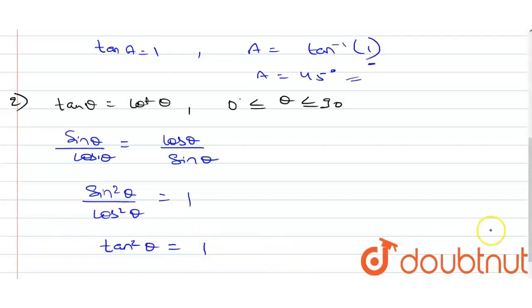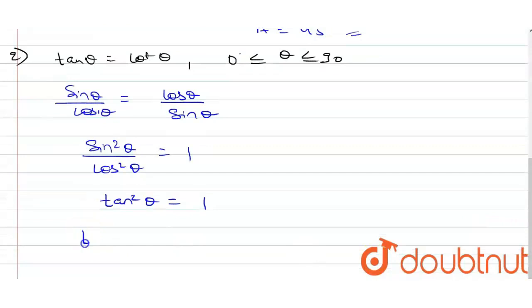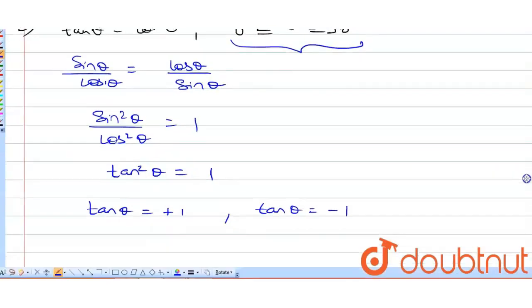It will become tan square equals 1, so that means tan will have two values: tan theta equals plus 1 and tan theta equals minus 1. Our equation says that it lies between 0 to 90 degrees.